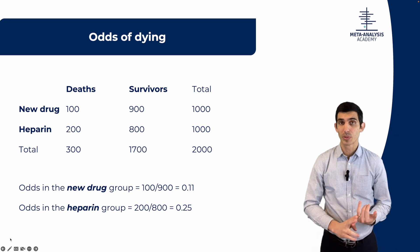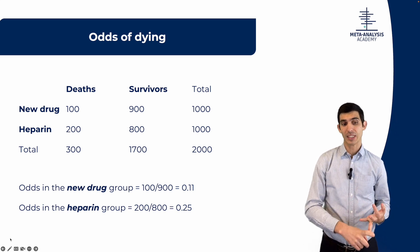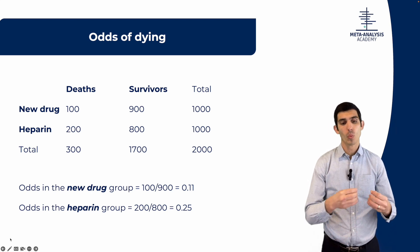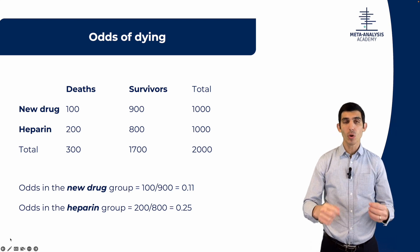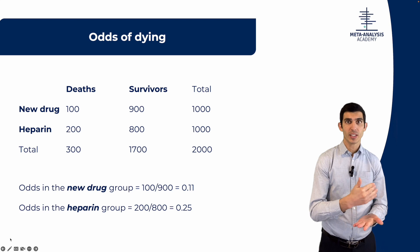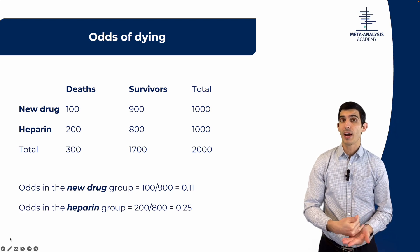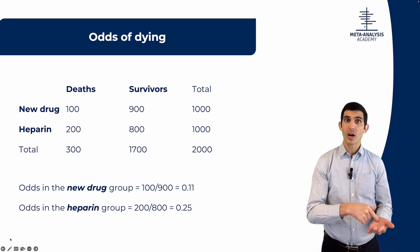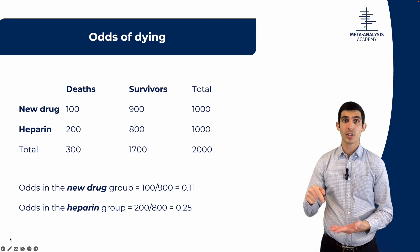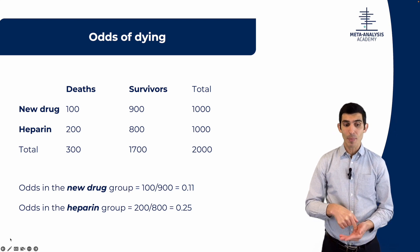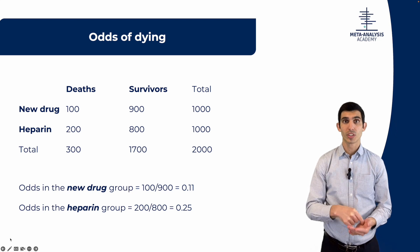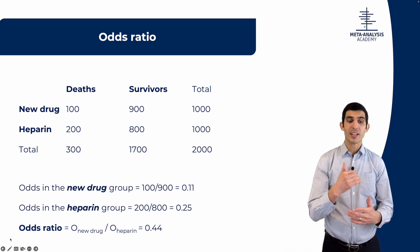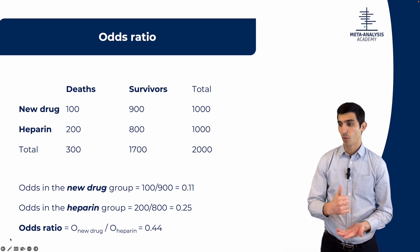The risk of dying was 10% in the new drug group and 20% in the heparin group. But the odds is one in nine in the new drug group and one in four in the heparin group. The odds in the new drug group is 100 divided by 900 non-events, which is 0.11, or one to nine. The odds in the heparin group is one out of four, so 0.25. You can then do an odds ratio by dividing the odds between both groups, which gives 0.44.